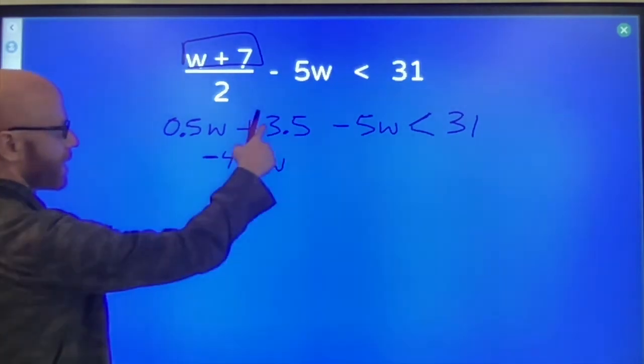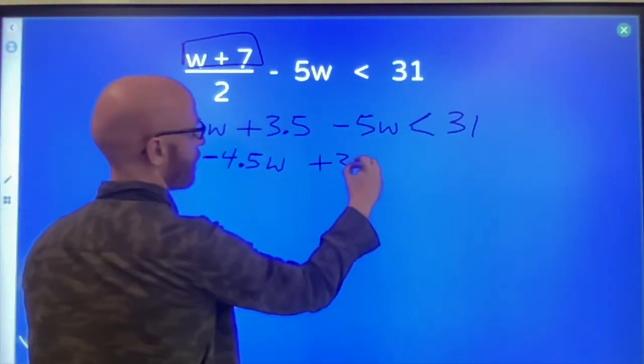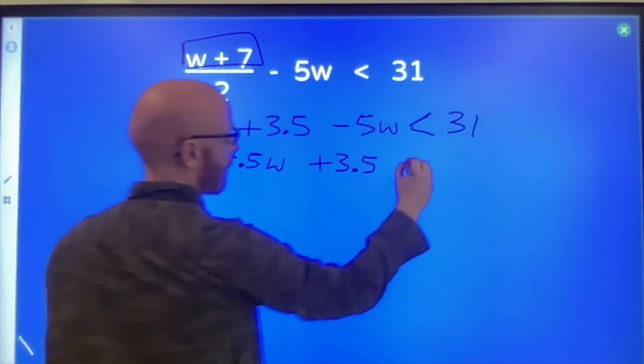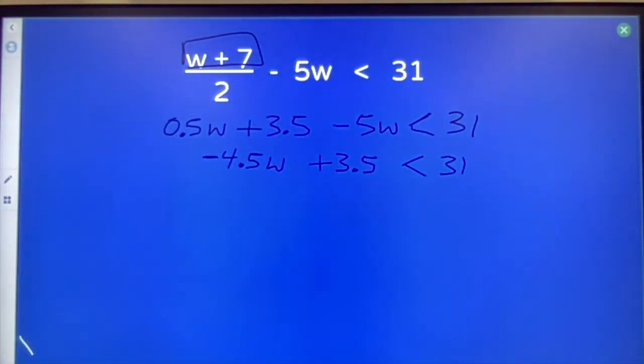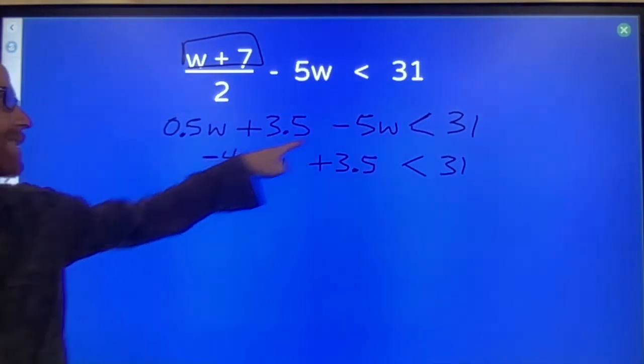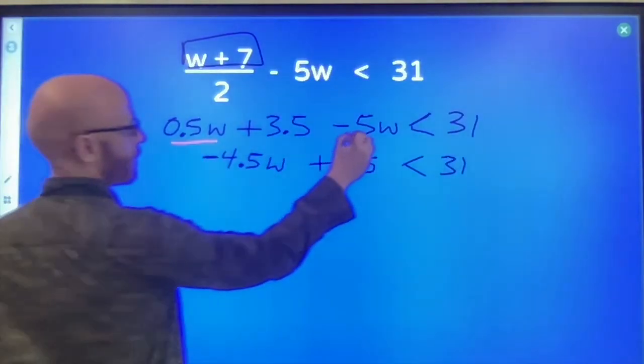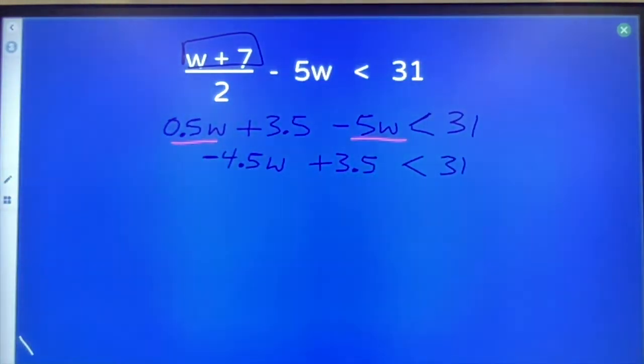0.5 W's minus 5 W's is negative 4 and a half W's. Still have this plus 3.5. Can't combine it with anything. Less than 31. That's distributing. That's combining. Now we deal with opposites.